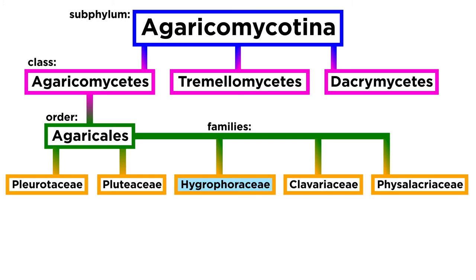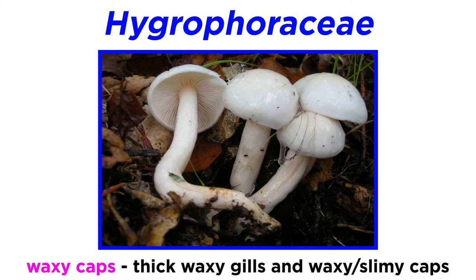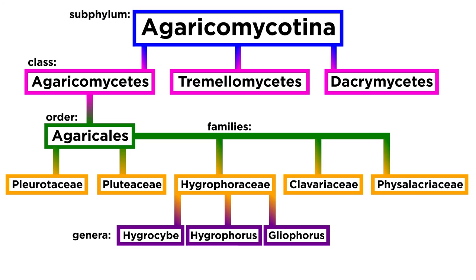Now we will transition to mushrooms in the family Hygrophoraceae. Mushrooms in this family are commonly called waxy caps because many species have thick waxy gills, and often waxy or slimy caps. All mushrooms in the family have white spore prints. We will discuss three genera in this family: Hygrocybe, Hygrophorus, and Gliophorus.